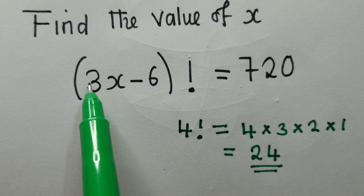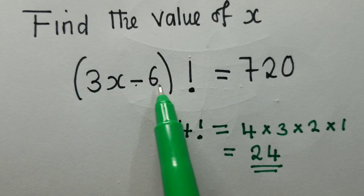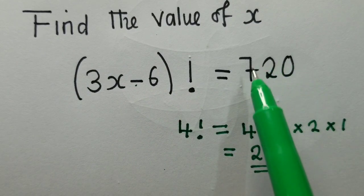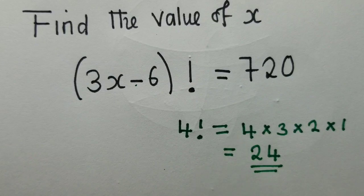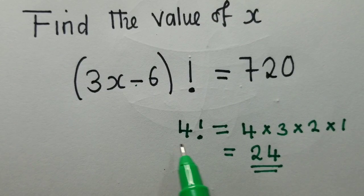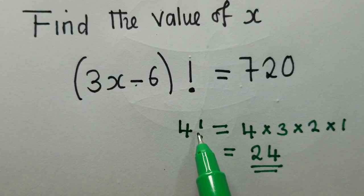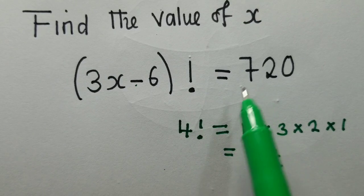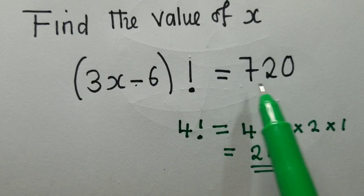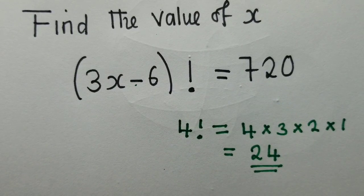So now we've got (3x - 6)! = 720. We need to change this 720 to a factorial number like it is here. So we need to find a number such that when we find its factorial, it gives us 720.